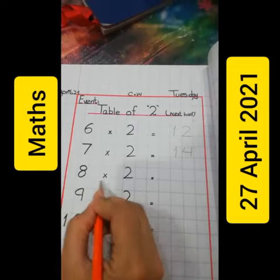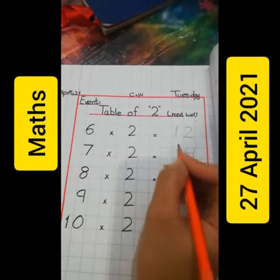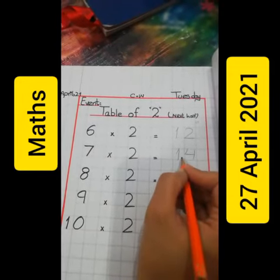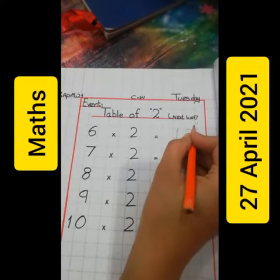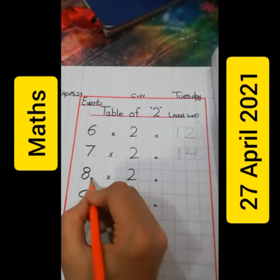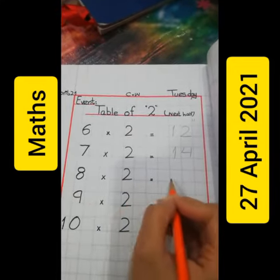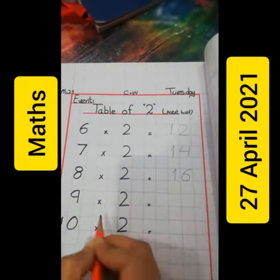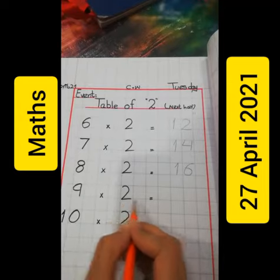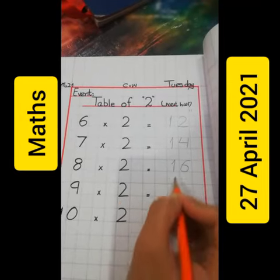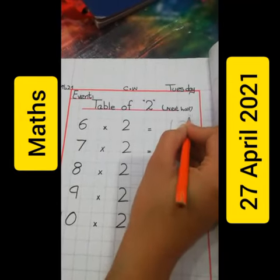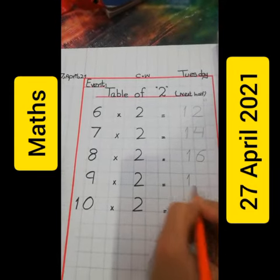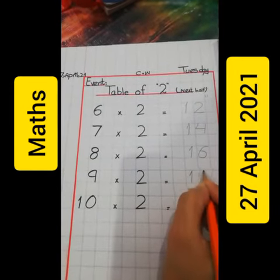Eight times two is sixteen. Nine times two: sixteen, seventeen, eighteen. So nine times two is eighteen.